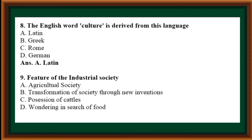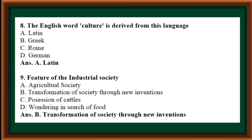A feature of the industrial society is: options are agricultural society, transformation of society through new inventions, possession of cattle, wandering in search of food. Correct answer is Option B: transformation of society through new inventions.